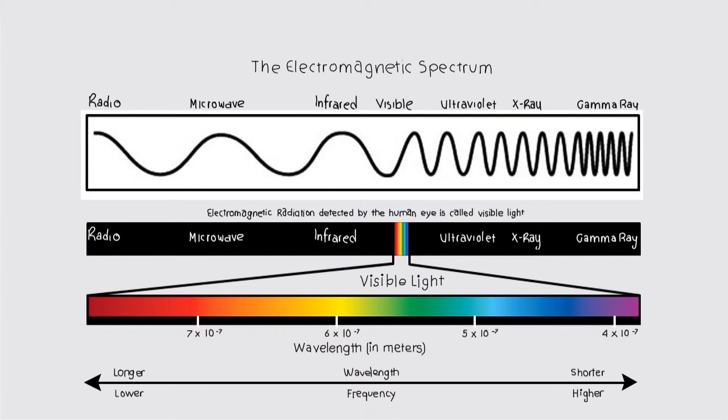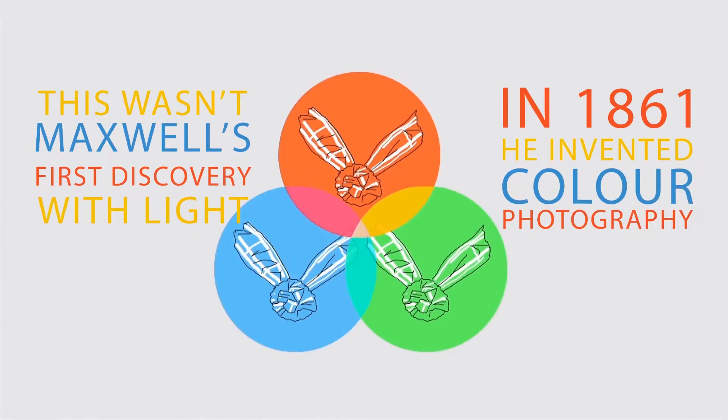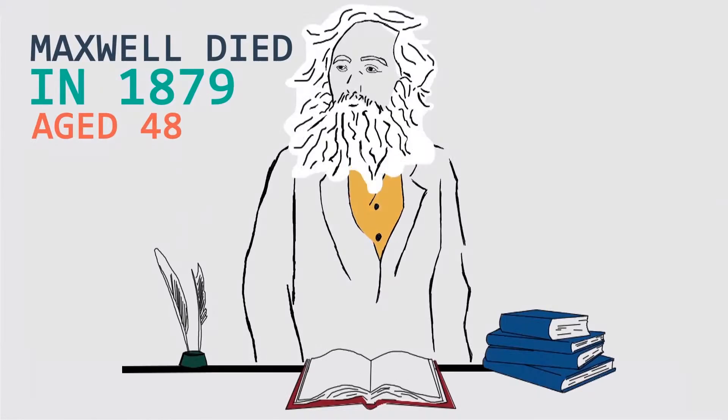This wasn't Maxwell's first discovery with light. In 1861, he invented color photography. Maxwell died in 1879, 48 years old.